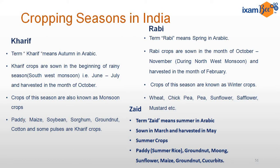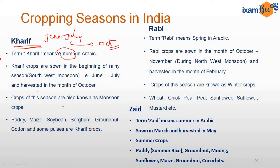In agriculture there are three seasons: Kharif, Rabi, and Zayed. The term 'Kharif' in Arabic means autumn or rainy season. The Kharif season starts from June-July and ends in October, so crops are sown in June-July and harvested in October. These are also known as monsoon crops because they are grown with the help of the southwest monsoon. Common examples include paddy, maize, soybean, sorghum, groundnut, cotton, and some Kharif pulses.